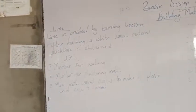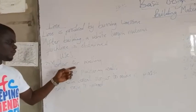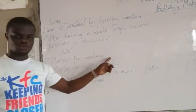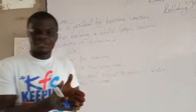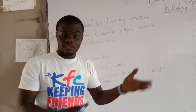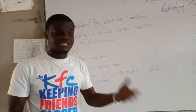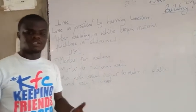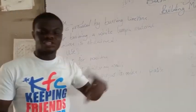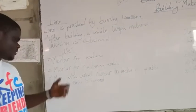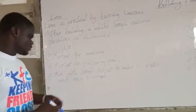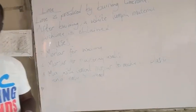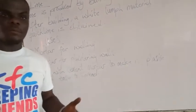Uses of lime. Lime is also used for mortar — mortar for walling. So you can use only lime in place of cement to make your mortar. You can also use lime in place of cement to make your mortar and use it for plastering. You can also mix lime with cement in order to make a mortar.